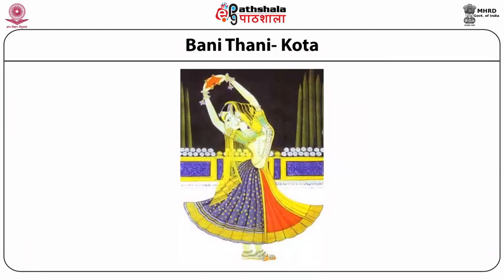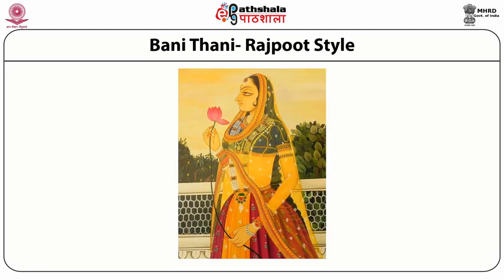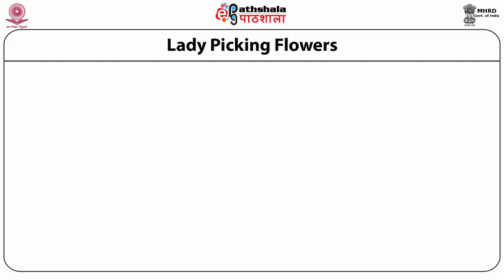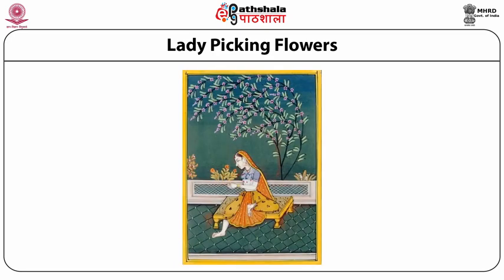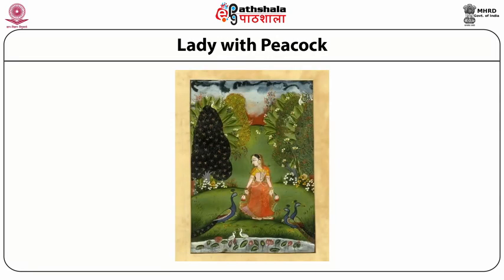We can also see an image of a female beauty called Bani Thani, belonging to the Kota school, made during the 18th century CE. Another image, also known as the Bani Thani style, belongs to the Rajput style of painting, again made in the 18th century CE. In the present miniature painting, a lady is seen picking flowers — a Mughal miniature painting belonging to the 18th century, beautifully showing the beautification of a female. In another image, a lady is seen enjoying herself with a peacock, helping us understand that the female is depicted enjoying nature.